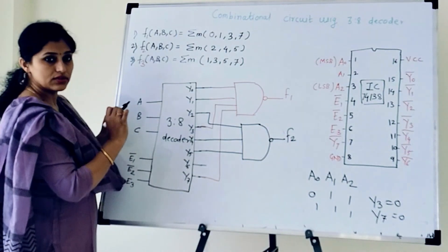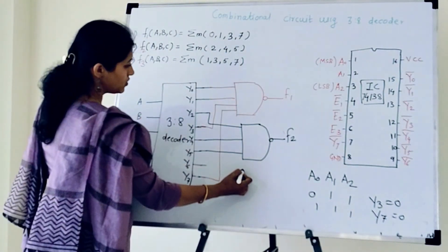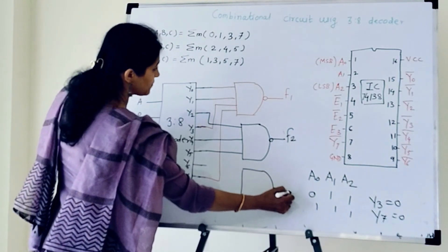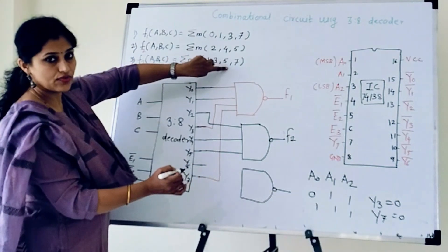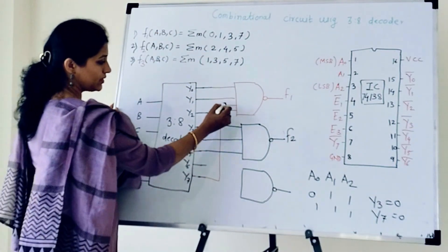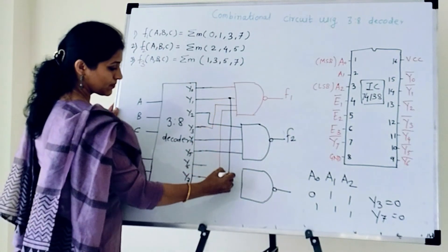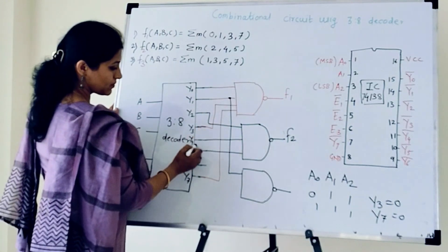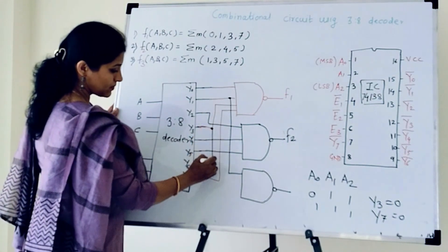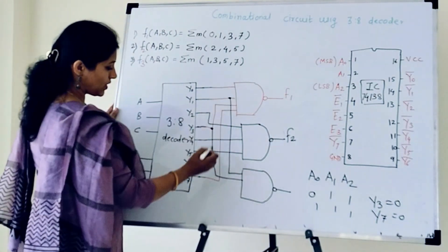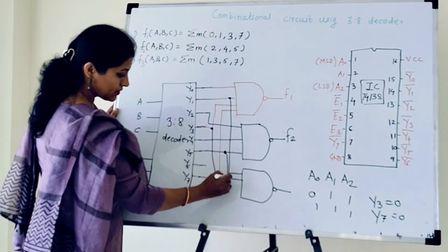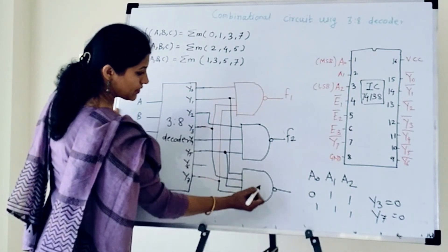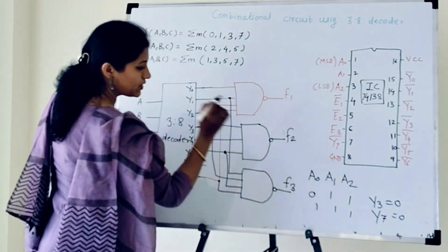F3 is 1, 3, 5, 7. So I will take 4 input NAND gate. 1, this is Y1. 3, this is Y3. 5, this is Y5 and Y7. And here I get F3.